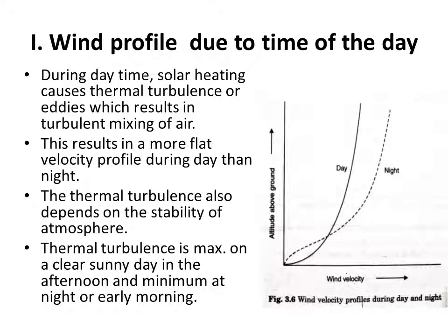First of all, let's see how the wind profile is affected by the time of the day, that is whether it is daytime or nighttime. During daytime, solar heating causes thermal turbulence or eddies which result in turbulent mixing of air in the atmosphere. This results in a more flat velocity profile during day than night, as you can see from the graph.